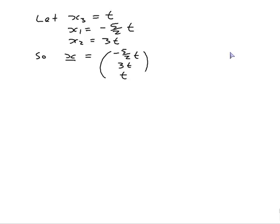And x₃ is t, which is t times minus 5 on 2, 3, 1, for t in R.